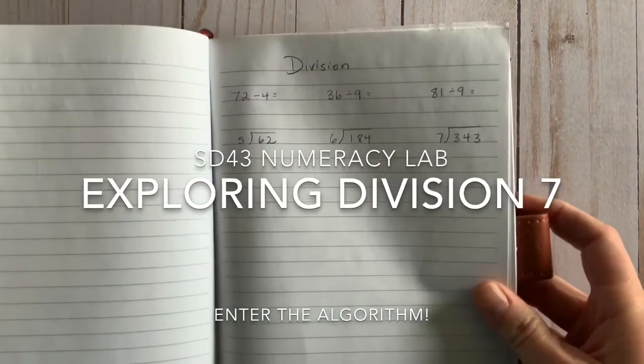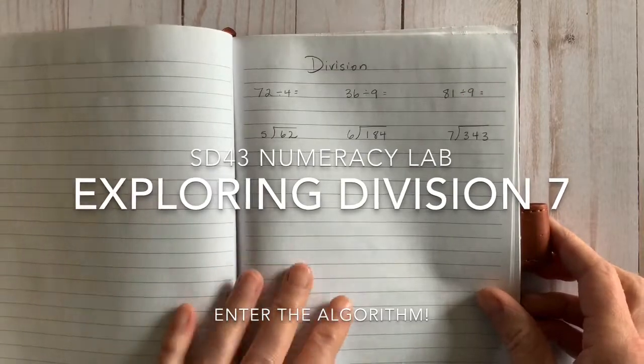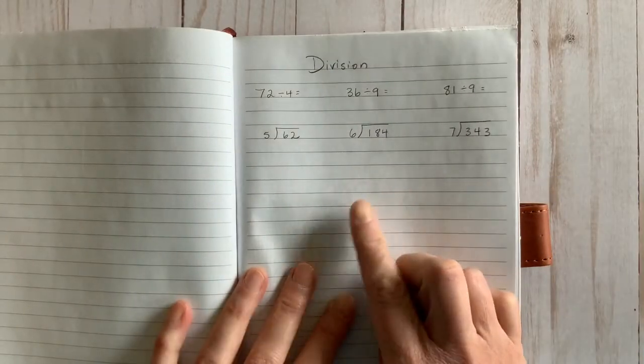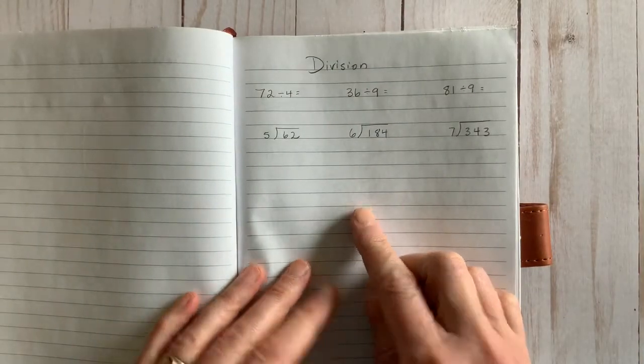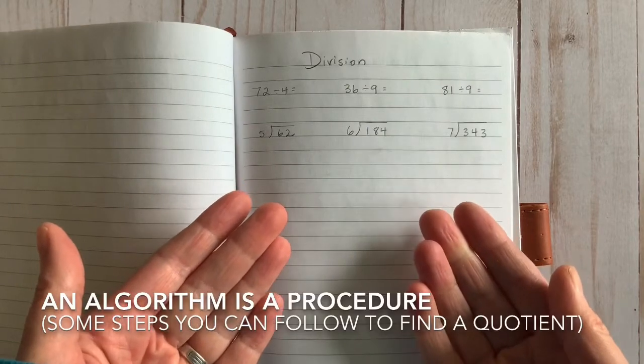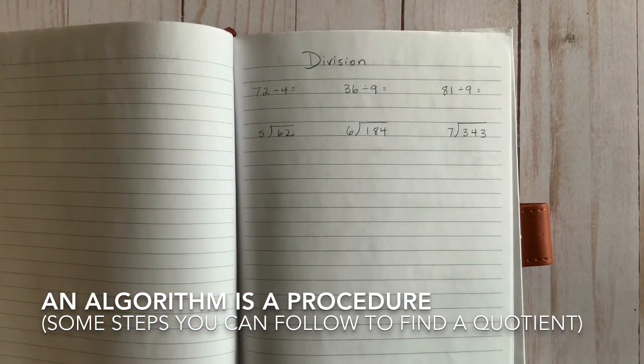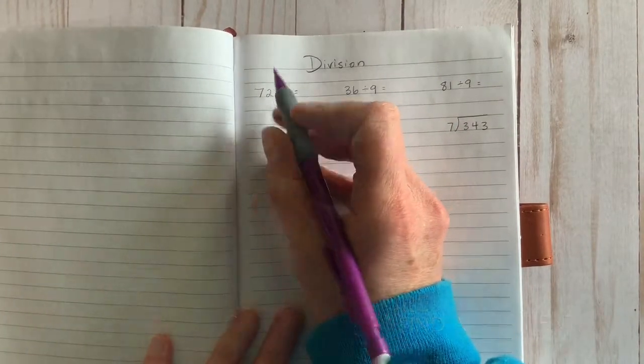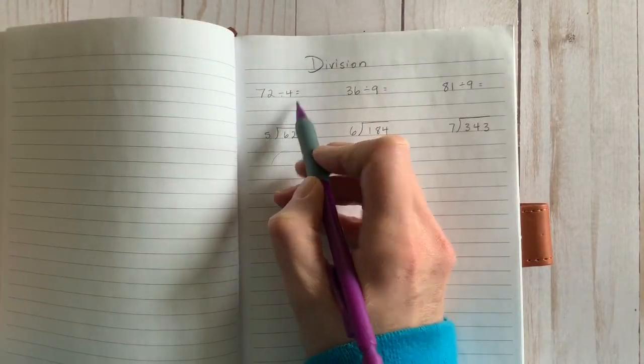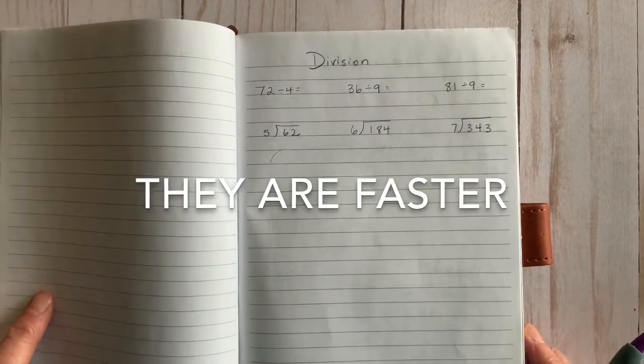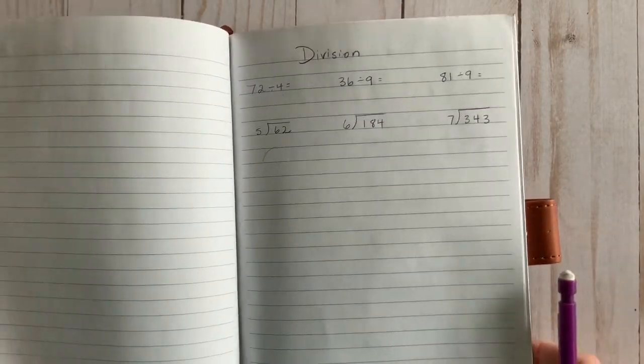Hi everyone, we've come full circle. Remember these? We're going to tackle them today using a division algorithm. What's an algorithm? Just a procedure that you can follow that will help you find a quotient. Algorithms are handy for one big reason: they're faster, well, with practice of course.